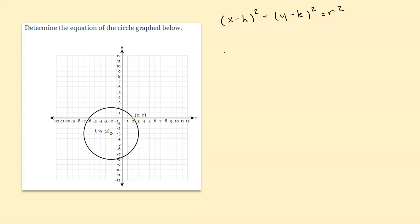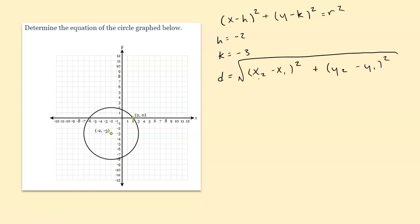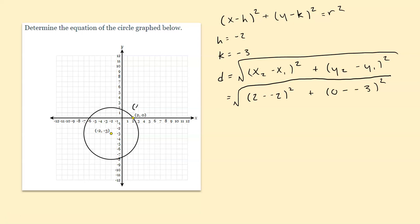The center is given to us, so we can go ahead and identify our h and k. The h value is negative 2 and the k value is negative 3. To find the radius, we have to use the distance formula: the square root of x sub 2 minus x sub 1 squared plus y sub 2 minus y sub 1 squared. We find the distance between these two points and that gives us the radius. This coordinate is x sub 2 and y sub 2, and the center is x sub 1 and y sub 1. So x sub 2 is 2, x sub 1 is negative 2. I have 2 minus negative 2 squared plus y sub 2 is 0 and y sub 1 is negative 3, so 0 minus negative 3 squared, the whole thing square rooted.